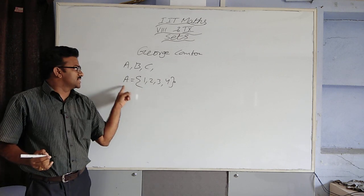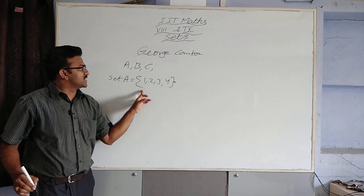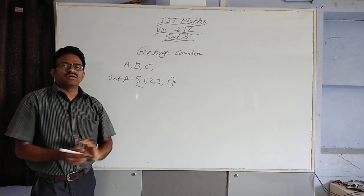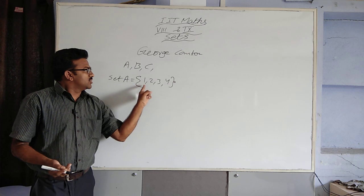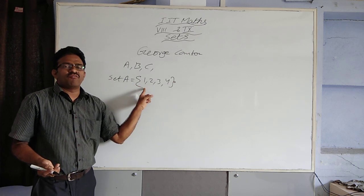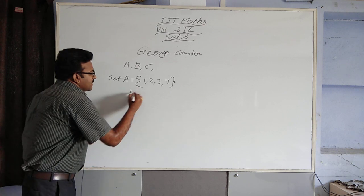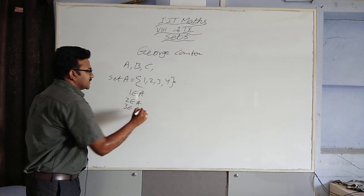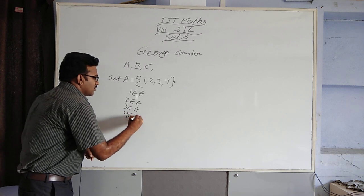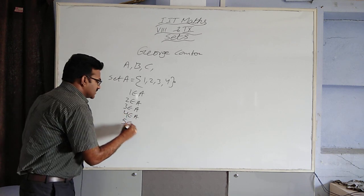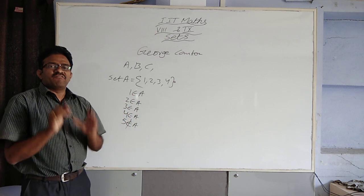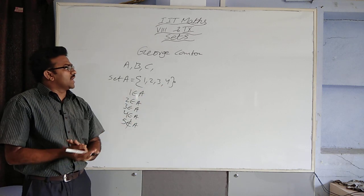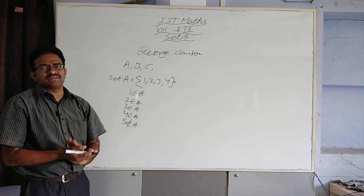For example, set A is equal to within curly braces 1, 2, 3. It is a set. Here 1, 2, 3, 4 are well-defined objects or well-defined elements. These are natural numbers from 1 to 4, and every element belongs to this set. We call this 'belongs to.' Now, 5 is also a natural number but it does not belong to set A. That is why a well-defined collection of objects means each element has the same property and each element belongs to that set.